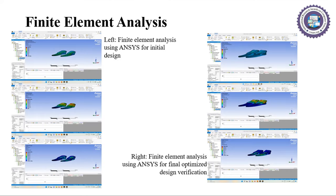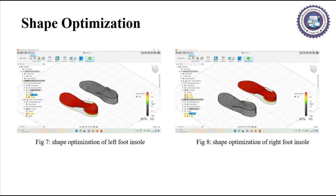In this slide, the finite element analysis performed in ANSYS software is shown. On the left side, you can observe the finite element analysis performed for the initial design. On the right side, you can observe the finite element analysis performed for the final optimized design verification. In the next slide, we can observe the shape optimization process being done. Shape optimization should be done by giving a constraint at one point and is done for both the left foot insole and the right foot insole as shown in figures 7 and 8.